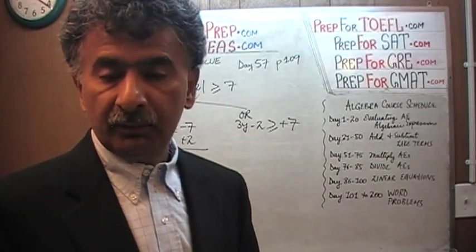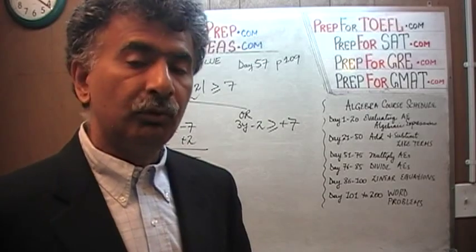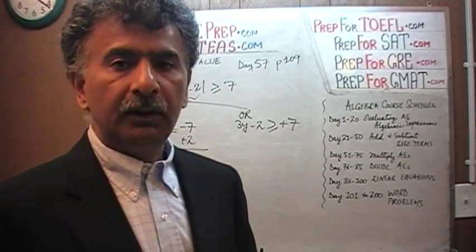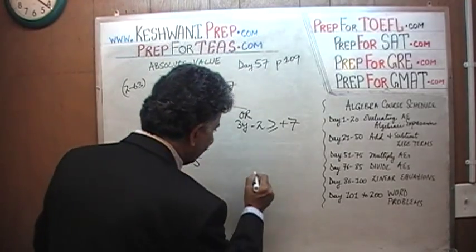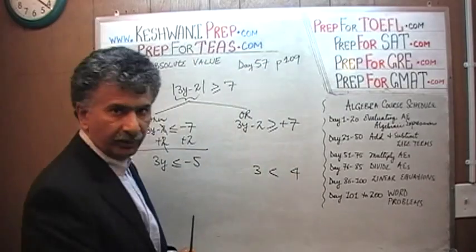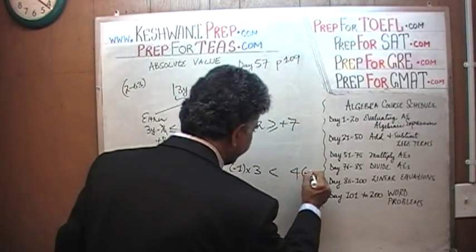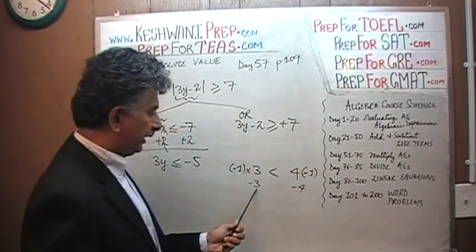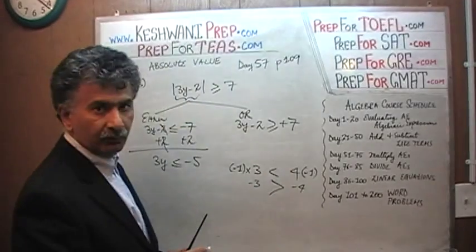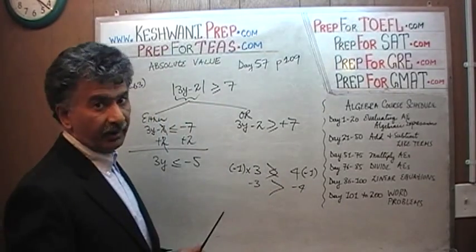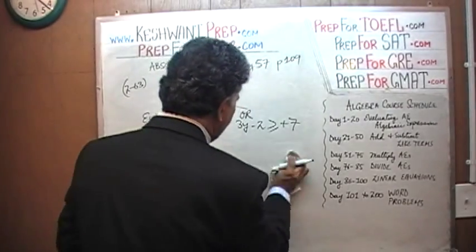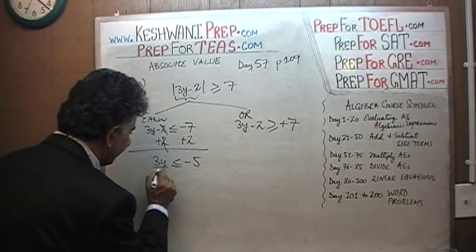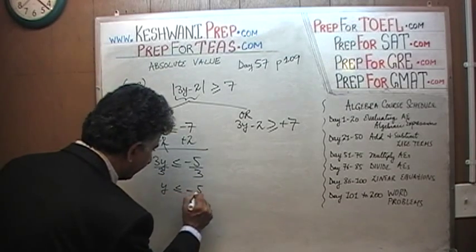The only thing to keep in mind is that if we multiply or divide an inequality by a negative number, we must switch the direction of the inequality. For example, we know 3 is less than 4, but if we multiply both sides by negative 1, we get negative 3 and negative 4, and negative 3 is actually greater than negative 4 — so the direction flips. Here we're only doing addition, so nothing changes. We divide both sides by 3 — a positive number — and find that y is less than or equal to negative 5 over 3. That's our first solution.